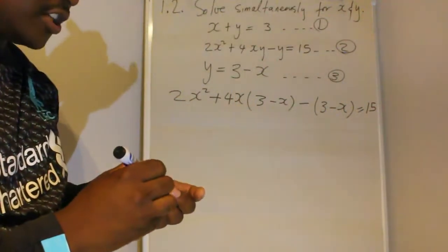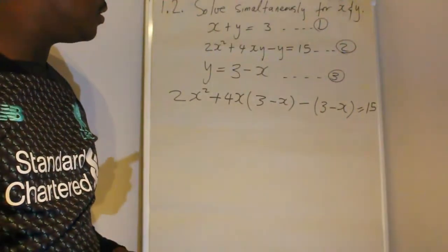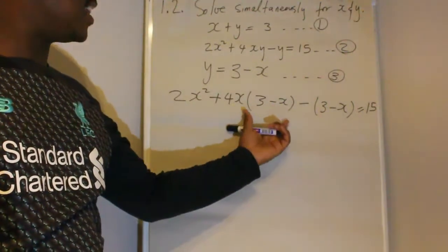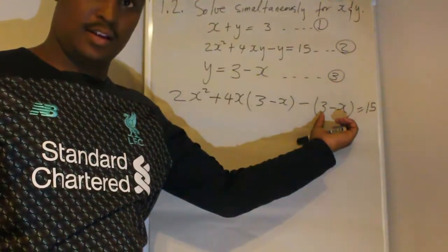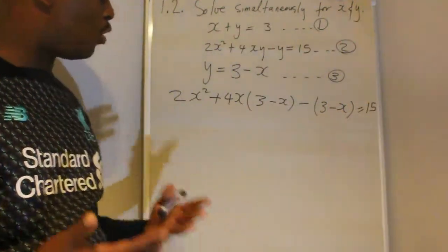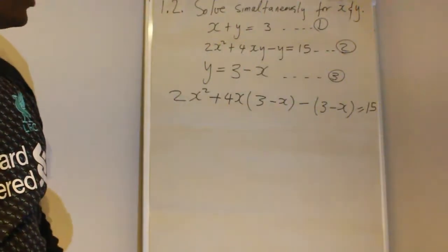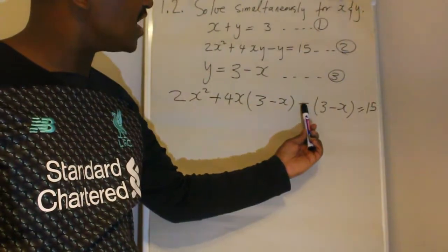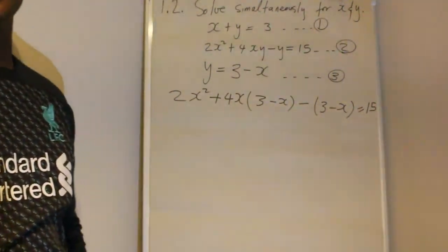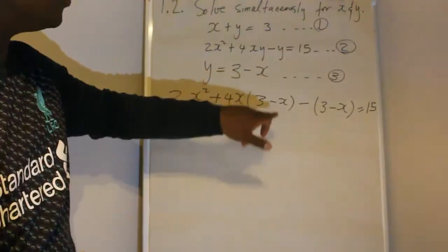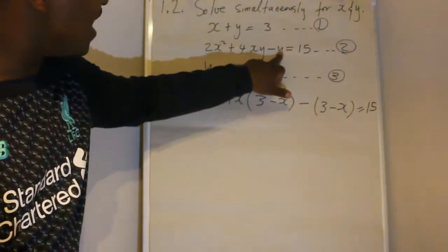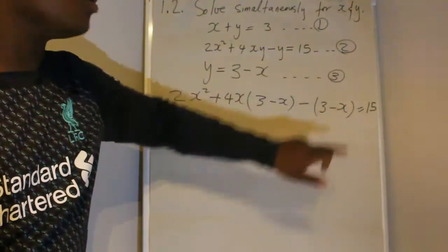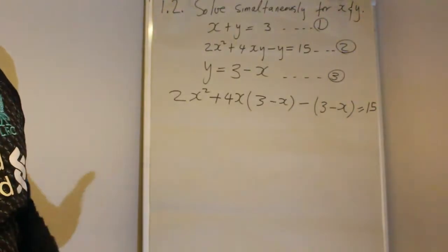When you're in this position, it's important to note that when you substitute, always put whatever you substitute in brackets. This ensures that a negative sign, like this one, multiplies the entire term and not just the term in front. If you didn't use brackets, the negative sign would only apply to the 3 and not to the negative x.